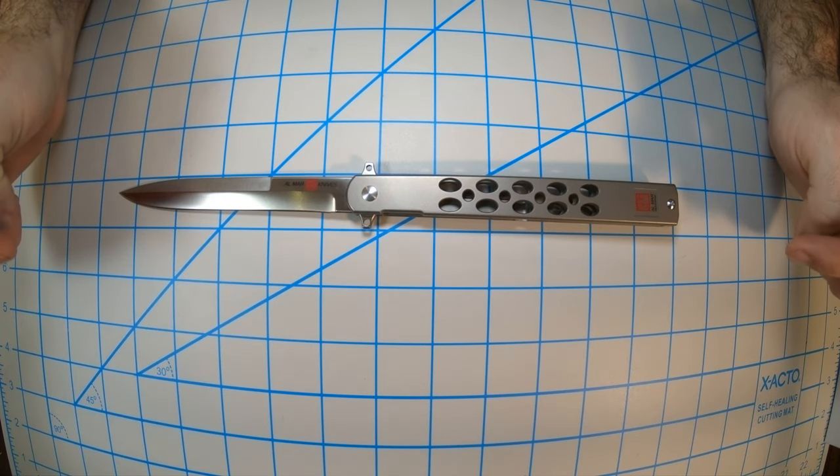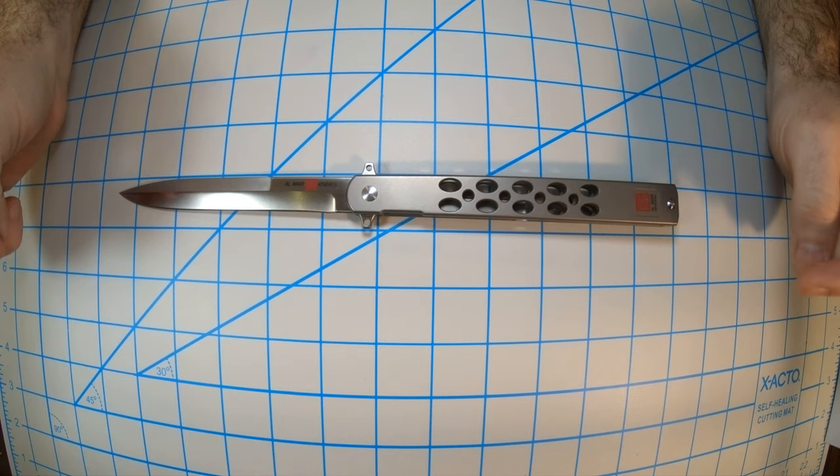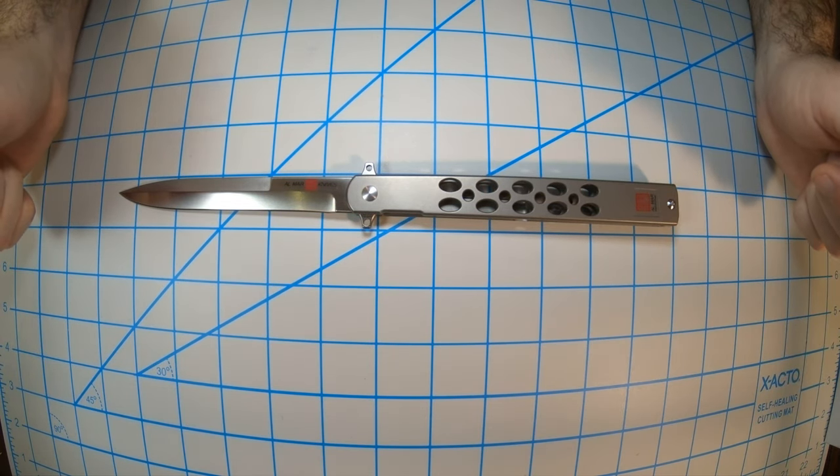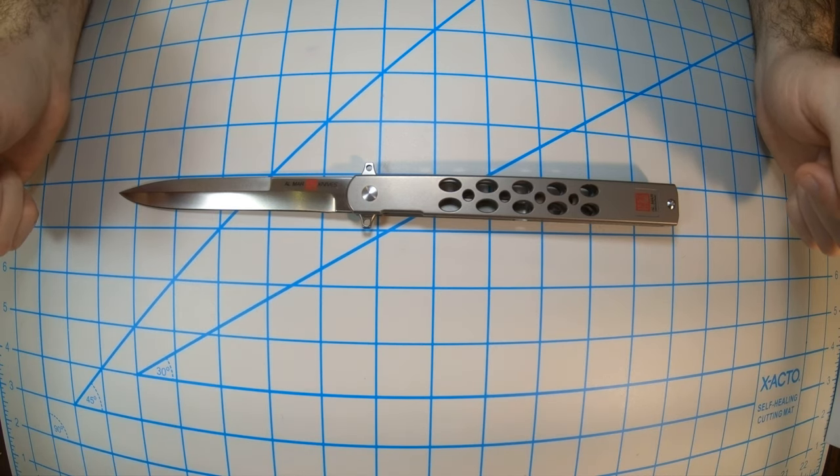You can use it as an EDC for everyday cutting tasks. It weighs 3.7 ounces. When it's open it's 11.25 inches and when it's closed it's 6.12 inches.